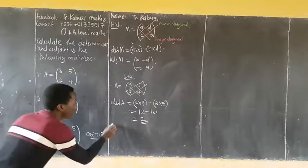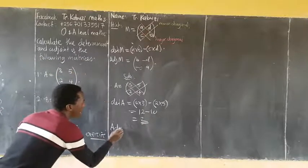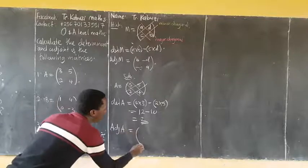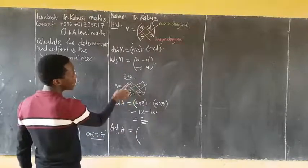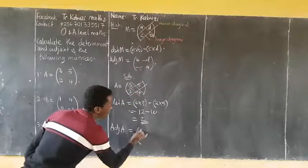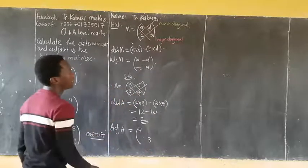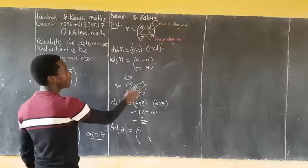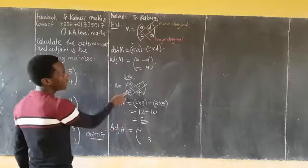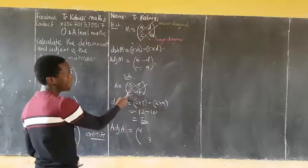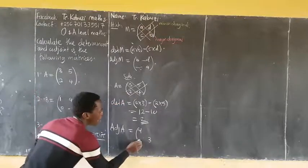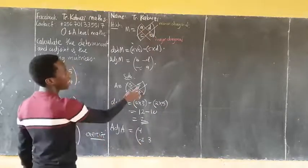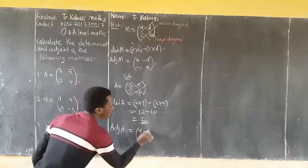The adjoint of A, we interchange this one, so this one comes here, the 3 comes here. So adjoint is 5, 3. Then we change the signs of these ones. If it's negative, it becomes positive, if it's positive, it becomes negative. Because positive, it's going to become now negative 2, and this one becomes negative 4.